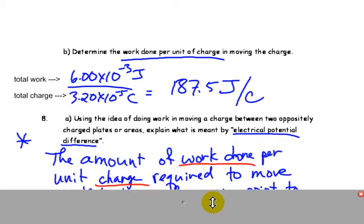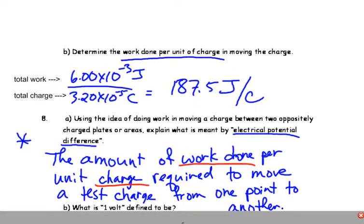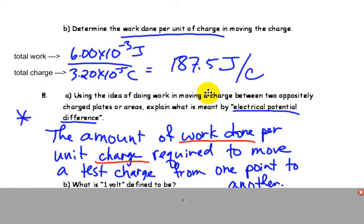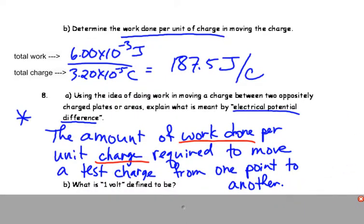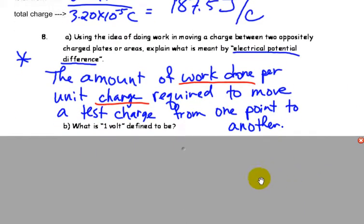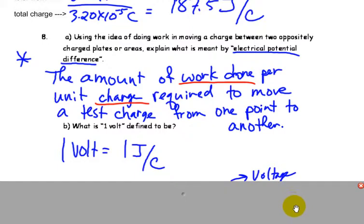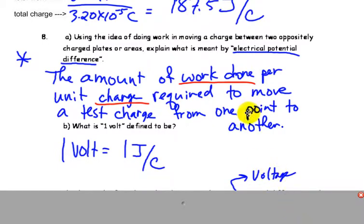Now that is very important, because it is really the electric potential difference. By relating it to what it is per charge, I have an idea of how much work is done per charge in this area between these two charge plates, and that gives me what electric potential difference is. The amount of work done per unit of charge required to move a test charge from one point to another, and that is what voltage is. It's measured in volts.